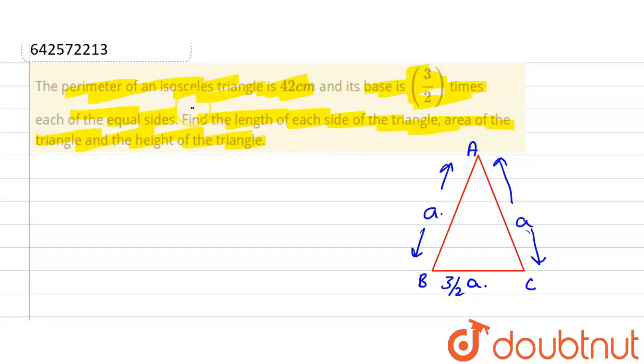Now find the length of each side of the triangle. Perimeter of 42 cm is given. So, perimeter is equal to total side length: A plus A plus 3 by 2 A, that is equal to 7A by 2, which equals 42 cm. So it is equal to 42 multiplied by 2 divided by 7. 7 cancels 42 by 6, so it is equal to 12.